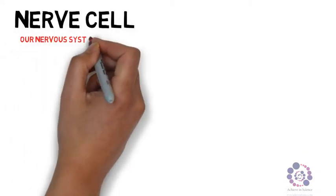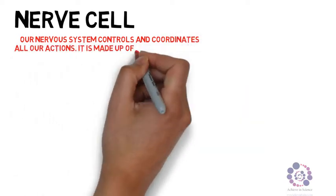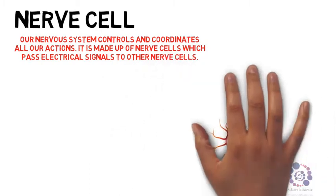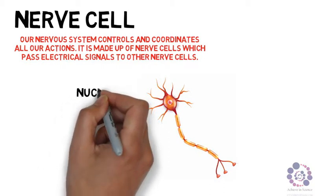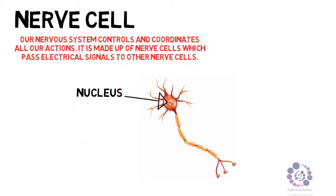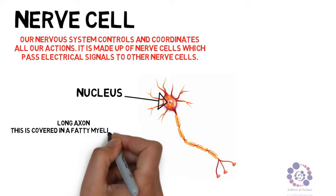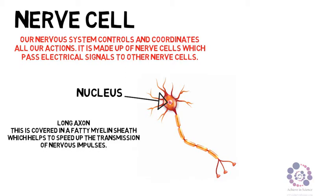The next cell is the nerve cell, otherwise known as the neuron. The nervous system is made up of many many neurons and the function of the nervous system is to coordinate and control responses. Neurons carry electrical signals. As you can see it's got a nucleus at one end, then a long axon that looks like a wire, but instead of being surrounded by plastic it's surrounded by a fatty myelin sheath which helps ensure the transmission of electrical impulses is successful.